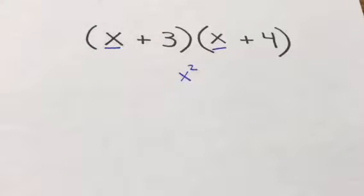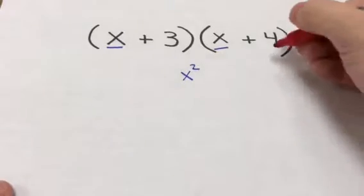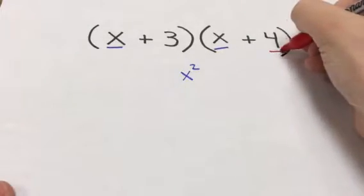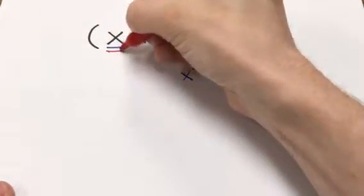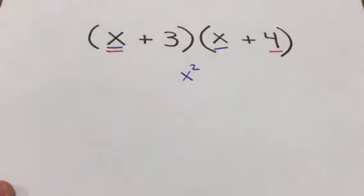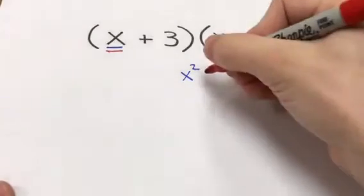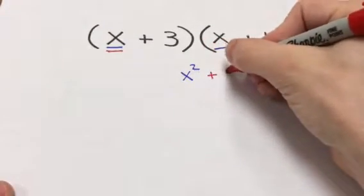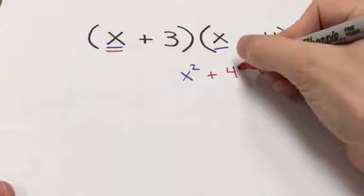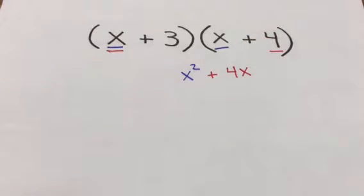Next, we do the O in FOIL, which stands for 'outside.' The outside two terms are 4 and X, so when we multiply those together we get 4x.